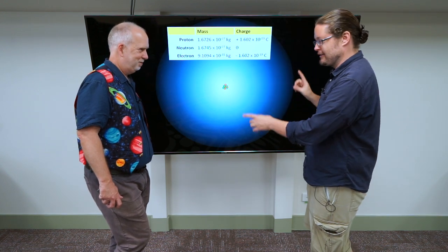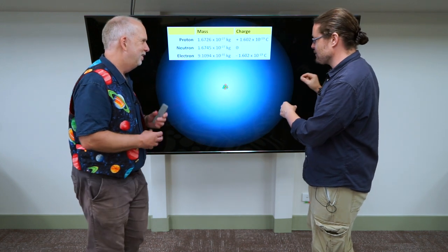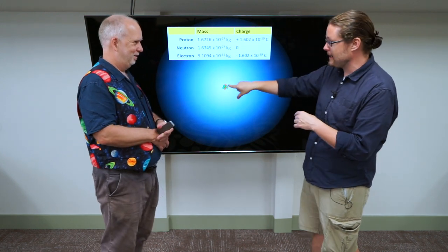But then on the outside, you have this really small, not very massive particle, but it has the negative charge that's the exact opposite of that massive proton.